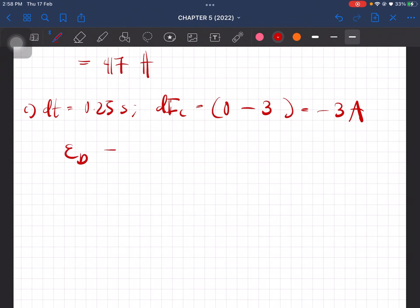So the induced EMF for coil D is just negative M delta Ic over delta t. So this is going to be equal to 5,004 volt.